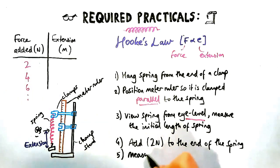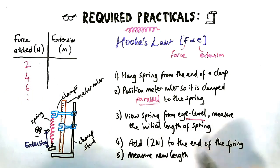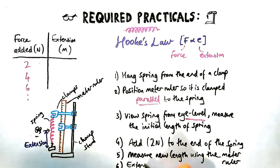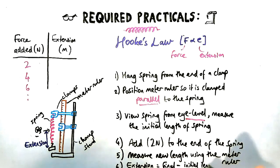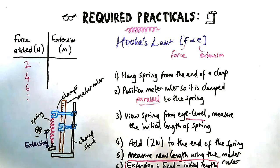So what you need to do then is essentially repeat step three. So at eye level, measure the new length using the meter ruler. And to find the extension, how much it's gone up by, you subtract those two measurements, so stage three and five, the final length minus the initial length, and then put it in your table.